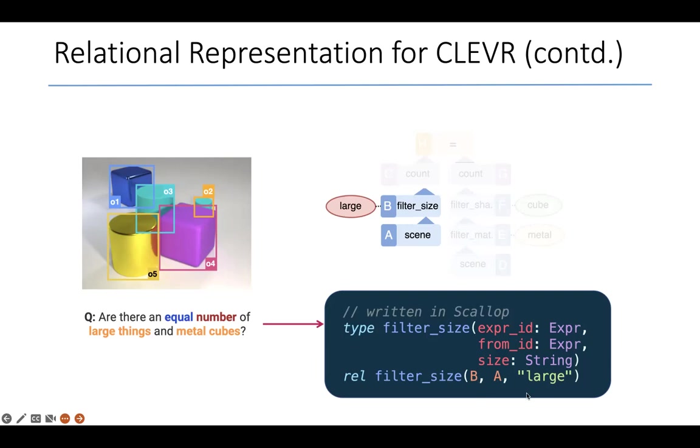So this tuple here says that there is an AST node with ID B, whose child is A, and it has an attribute large. This is a way to filter all the objects that you see in the scene that have the large attribute.